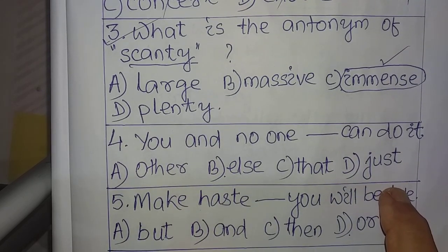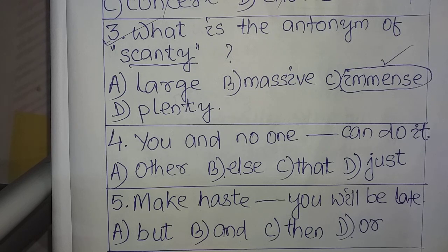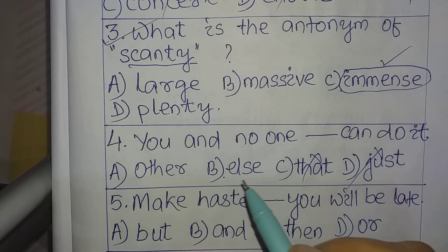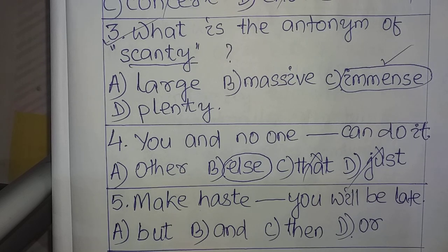Question number four: 'You and no one ___ can do it.' Fill in the blank with the correct word. Options: A) other, B) else, C) that, D) just. The appropriate word here is 'else'. 'Else' also means 'other'. So the sentence becomes: 'No one else can do it,' meaning nobody else can do this — only one person can.